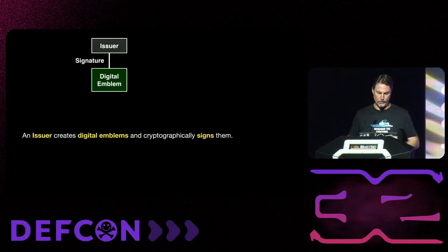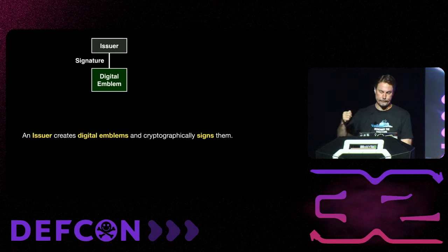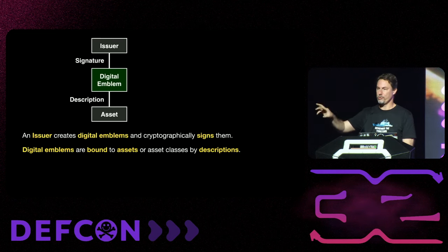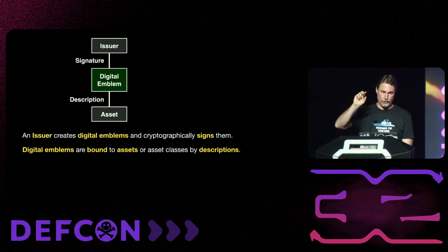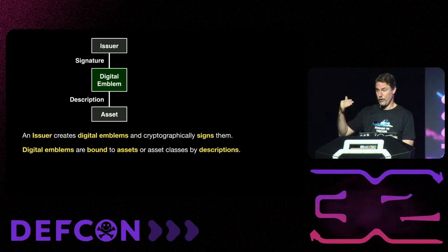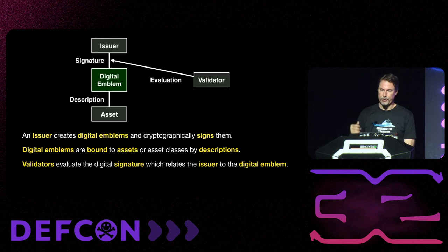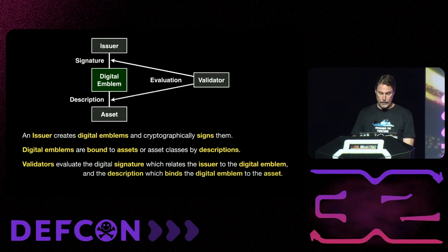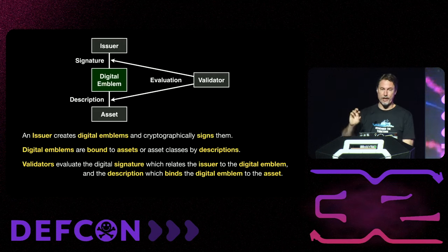The trick is not physically attaching the emblem to the thing, but associating it with the thing. We have an issuer who creates a bundle of records that constitute the digital emblem and signs it. That gets attached to an asset through a description — this digital emblem applies to this person, crate, building, or vehicle — described by a serial number, height, mass, location, or time and place. A validator evaluates the signature to confirm the issuer is legitimate, then checks the description to confirm the asset matches.